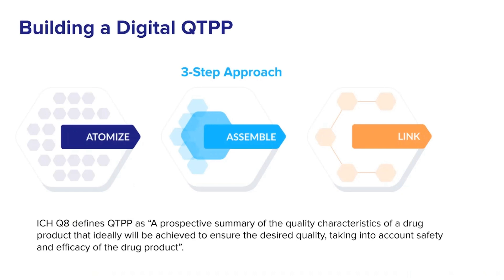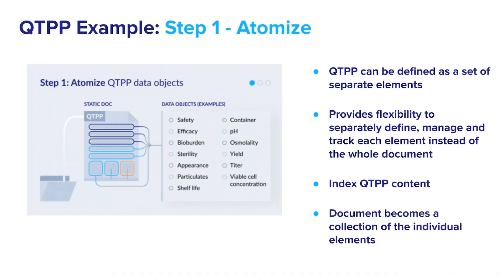Let's take a look at how the structured data principles discussed earlier can be used to build a digital QTPP. The principles are broken down into a three-step approach where data is atomized, assembled, and then linked to build a digital construct that meets the ICH Q8 requirements. The QTPP is often managed as a comprehensive controlled document. Even though it should be drafted at the start of a development program, many organizations don't draft one until they are well into the development process, which is at odds with the quality-by-design principle of starting with the end in mind.